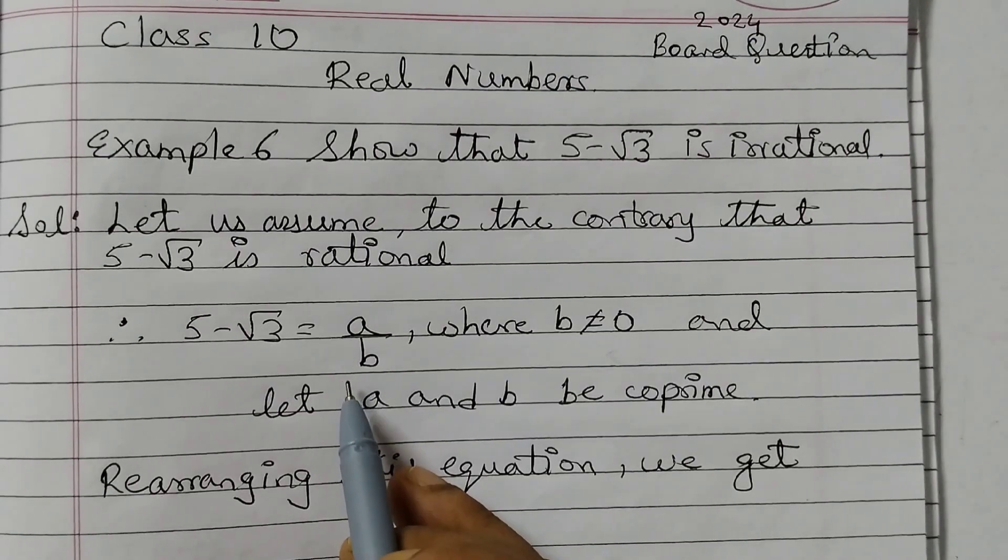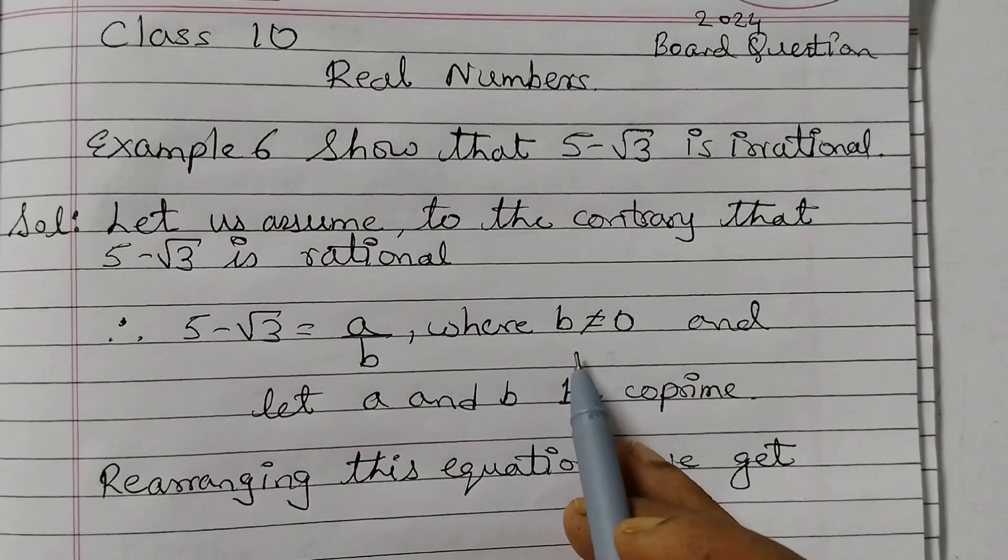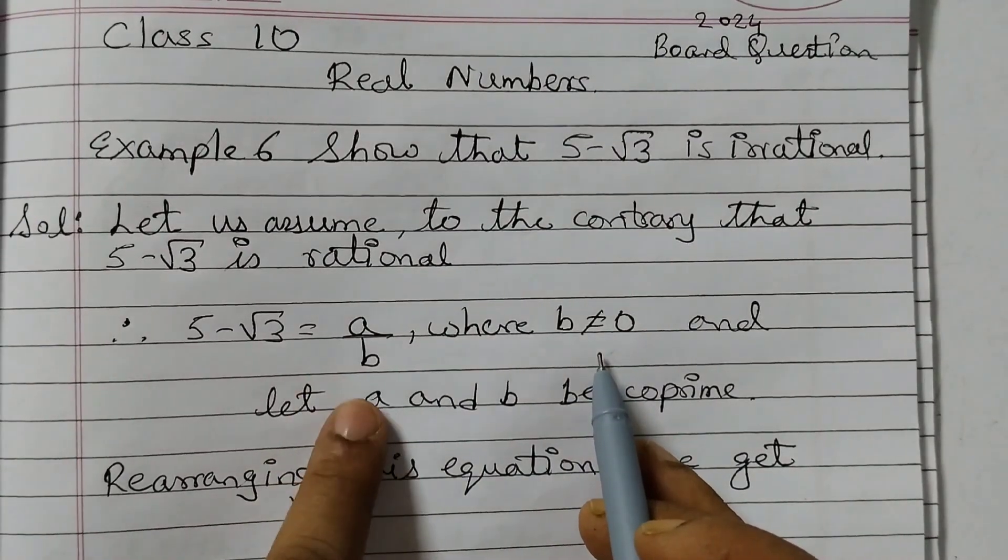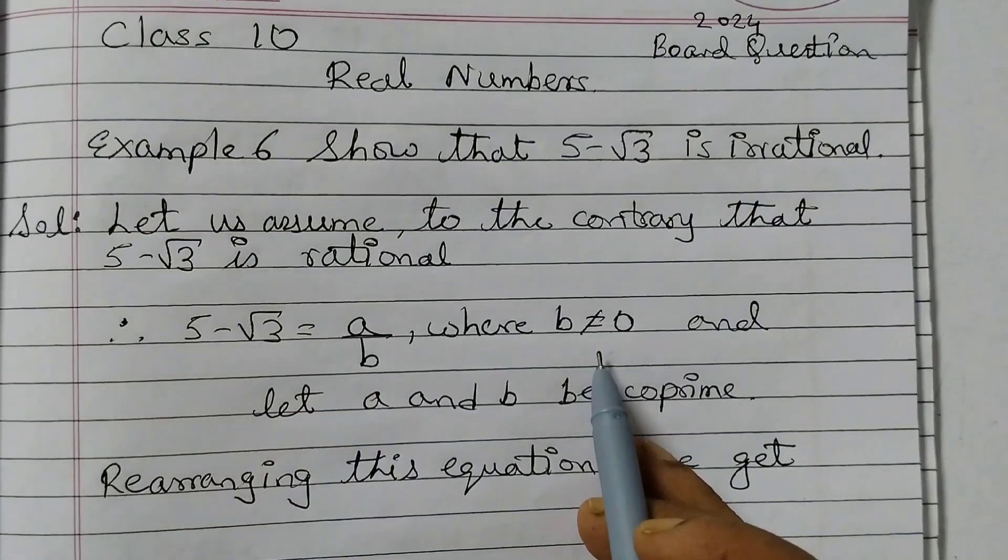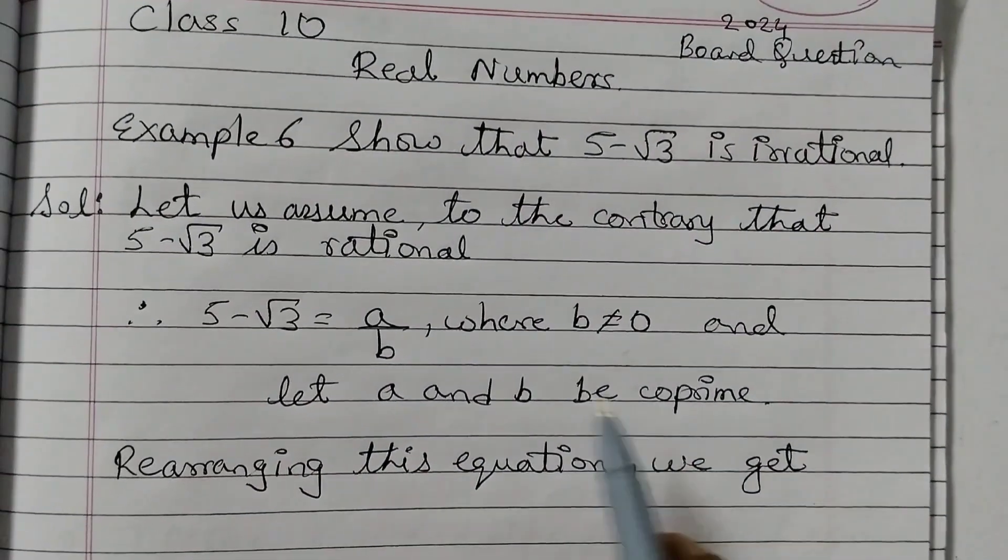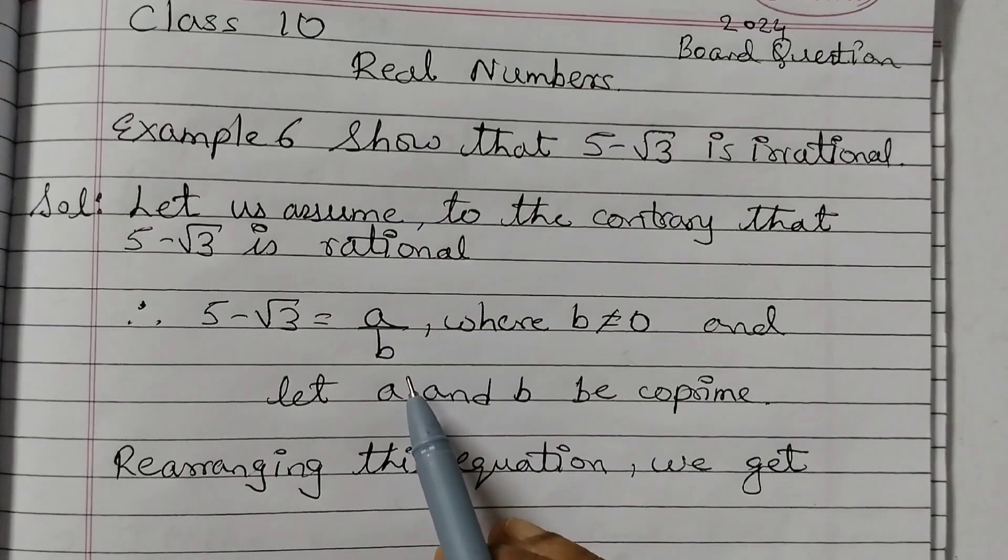So we are taking A and B, we write it as A upon B where B, the denominator, is not equal to 0 because if the denominator becomes 0, this becomes undefined. So B is not equal to 0. And let A and B be coprime. Coprime means the only common factor of A and B is 1.